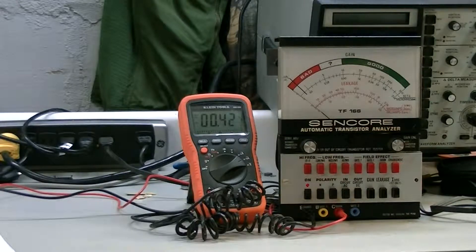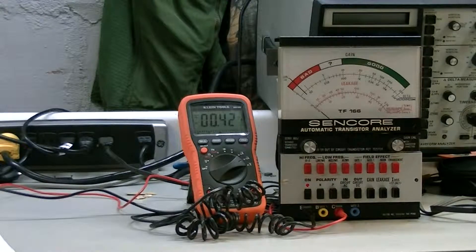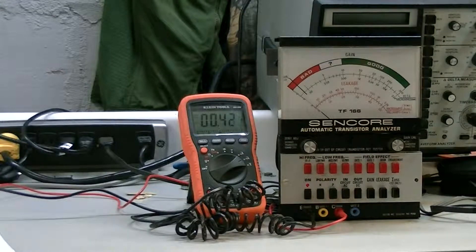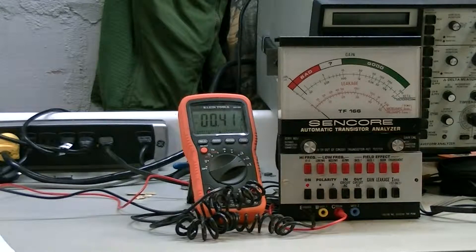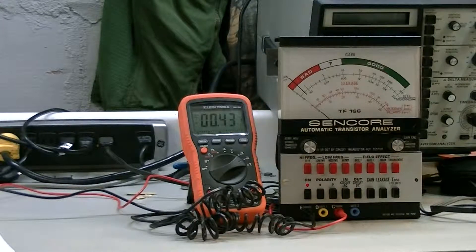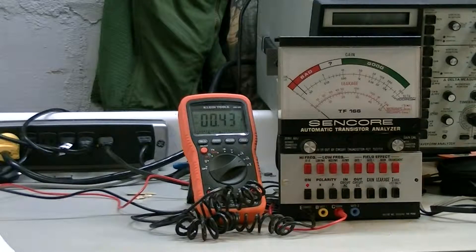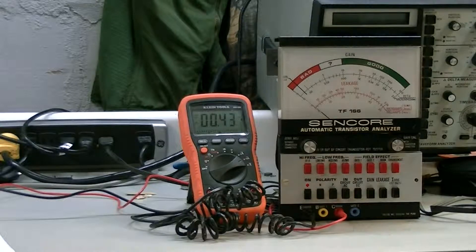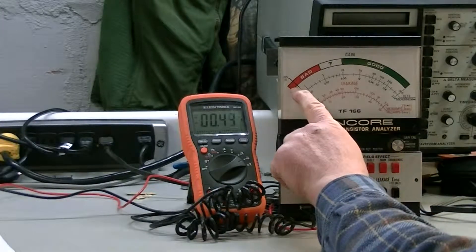So I'm going to go through the calibration instructions here. It tells you to remove the TF166 from its case, which is done, and then you're supposed to lay it on its right side and adjust the static meter zero to zero on the left edge.